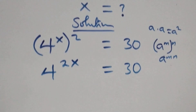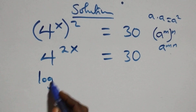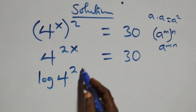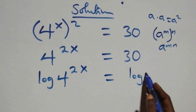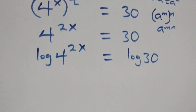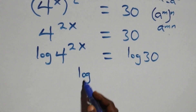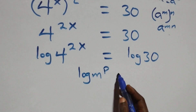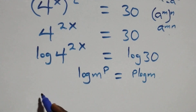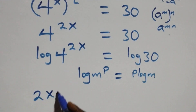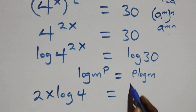Next we take the log on both sides, giving us log of four raised to power two x equals log thirty. Then we apply the power rule of logarithms, where log of m raised to power p is the same as p times log m. That gives us two x times log four equals log thirty.